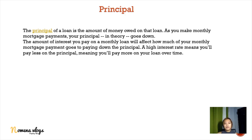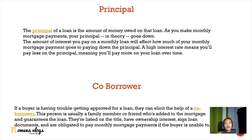Principal, in a real estate context, refers to the first or main buyer of the property — that is what you call the principal buyer or principal owner. A co-borrower is someone — usually a family member or friend — added to the mortgage to help a buyer who is having trouble getting approved for a loan. The co-buyer also has their name appear on the title of the property, as they are part of the co-ownership of the property.